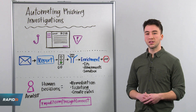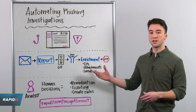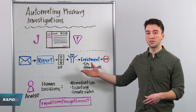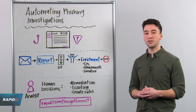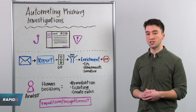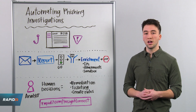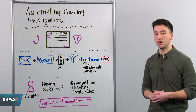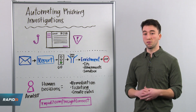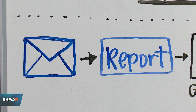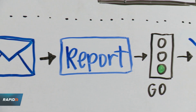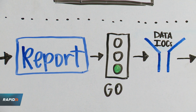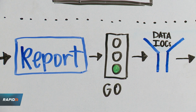You'll start with ingesting a potential phishing alert, and these can be received in a number of different ways. You can do this via an API integration with an email service provider of your choice. You can also set things up so that when a user submits a message with a report phish button or by forwarding it to a specific inbox, it'll automatically trigger a workflow that will walk through your company's runbook or playbook.